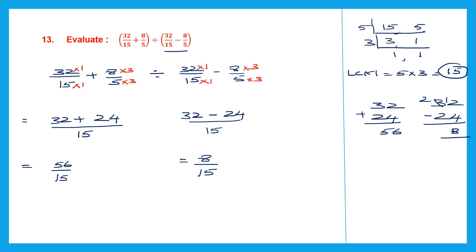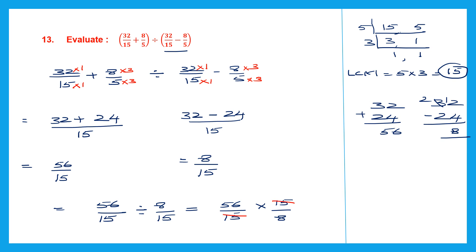So we have 56 by 15 divided by 8 by 15. Division changes to multiplication: 8 by 15 becomes 15 by 8. Now let's see what we can cancel: 15 and 15 are both divisible by 15; we can also cancel 8 and 56 — 8 ones are 8 and 8 sevens are 56. So in the numerator we have 7 and the denominator we have 1. 7 by 1 is equal to 7.